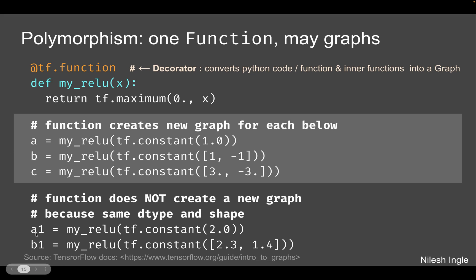After running a, b, and c, if we run a1 and b1 later, this will not create new graphs because they've already been created for these input types. A rank-zero float tensor is similar to input a, so that code will use the graph created for a. In the case of b1, a rank-one float tensor is the same type as c, so it would use the same graph that was created for c.